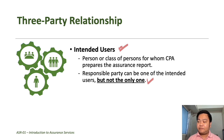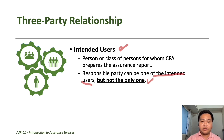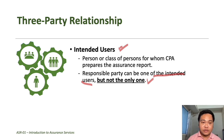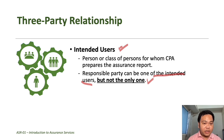For example, in the audit of financial statements, the company — being the responsible party — can also be one of the users of the audit report, meaning they can also receive the audit report from the practitioner. However, they should not be the only one using such report; there should be other users of financial statements, like investors and creditors. The intended users therefore include investors and creditors, who are different from the responsible party, which is the company, who can also use the audit report issued by the CPA.